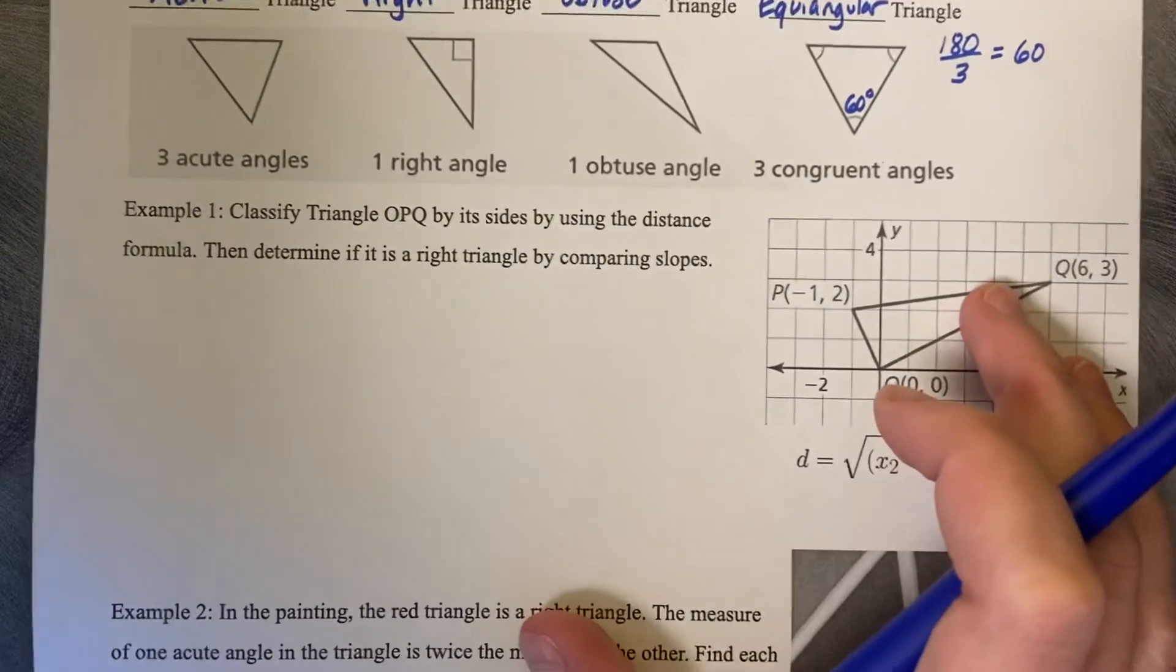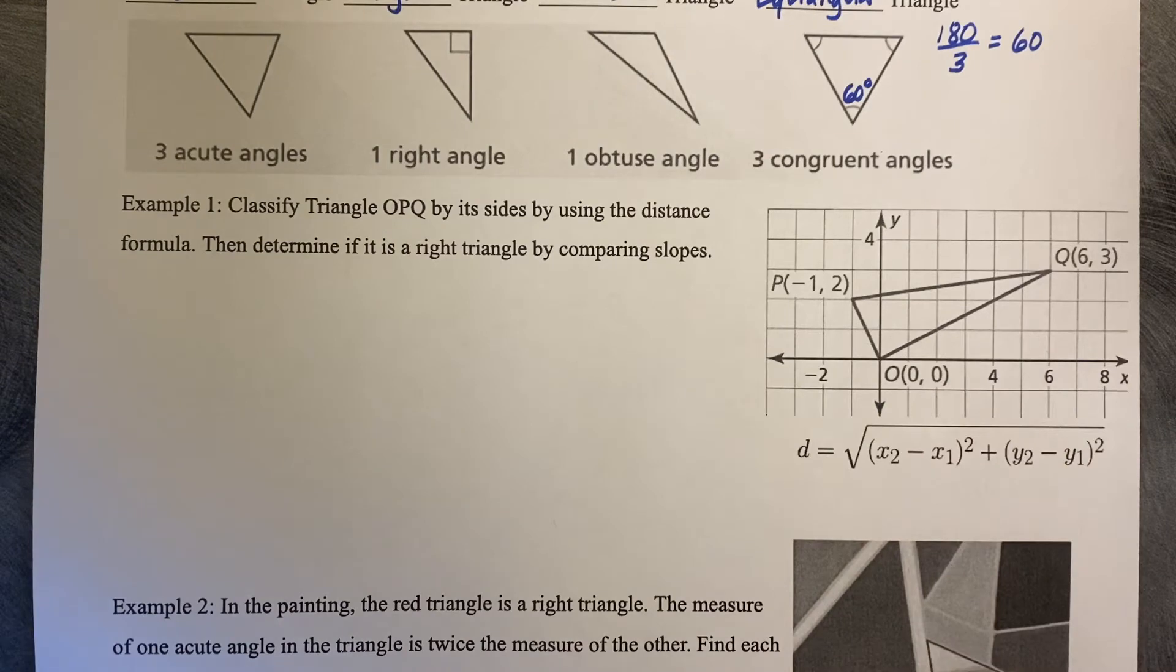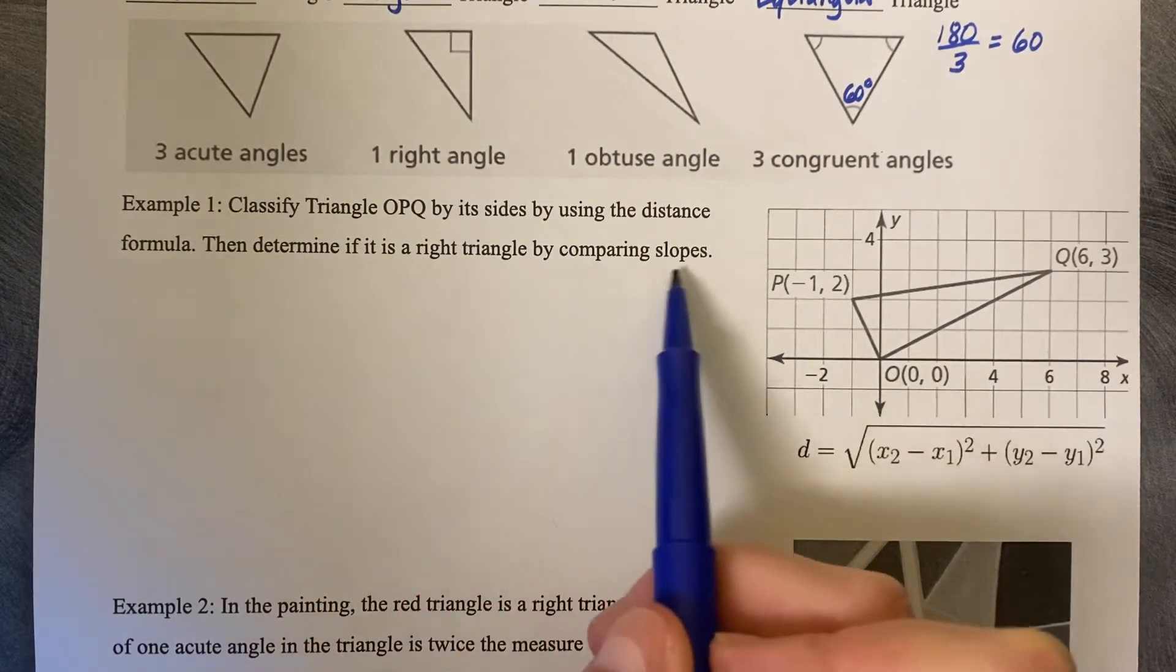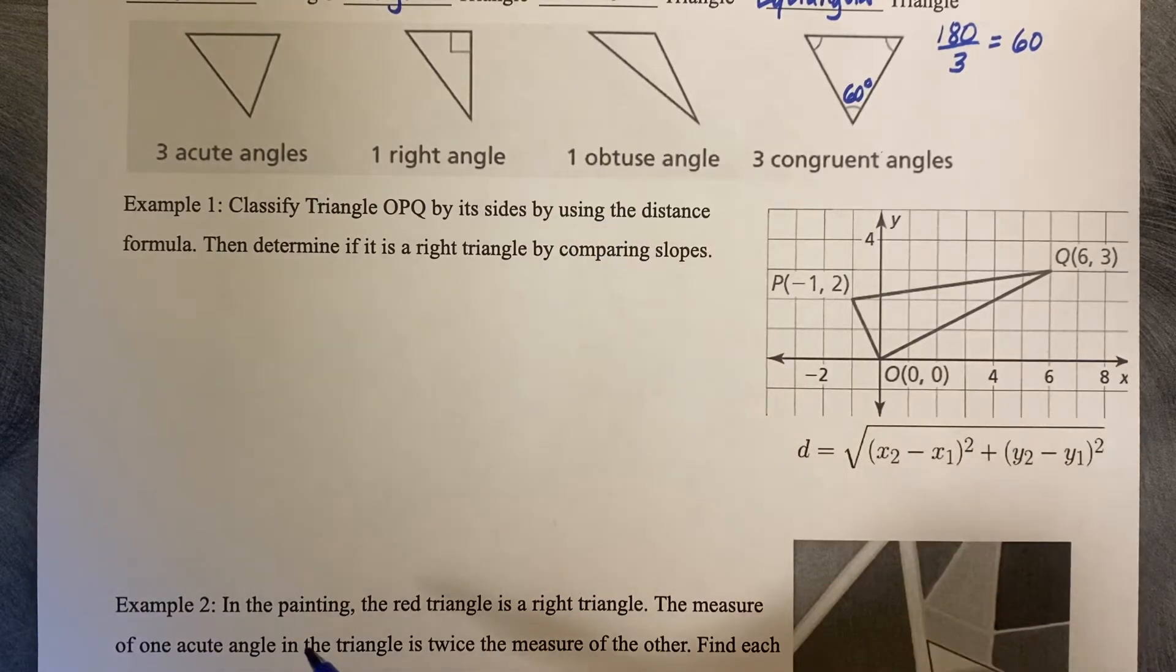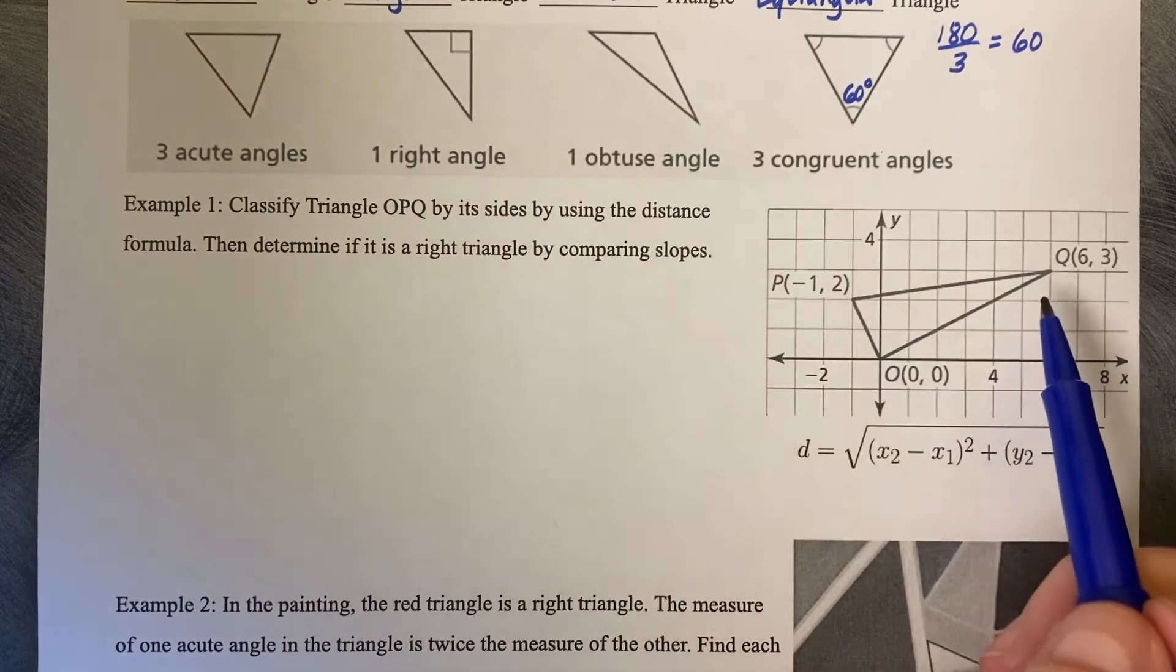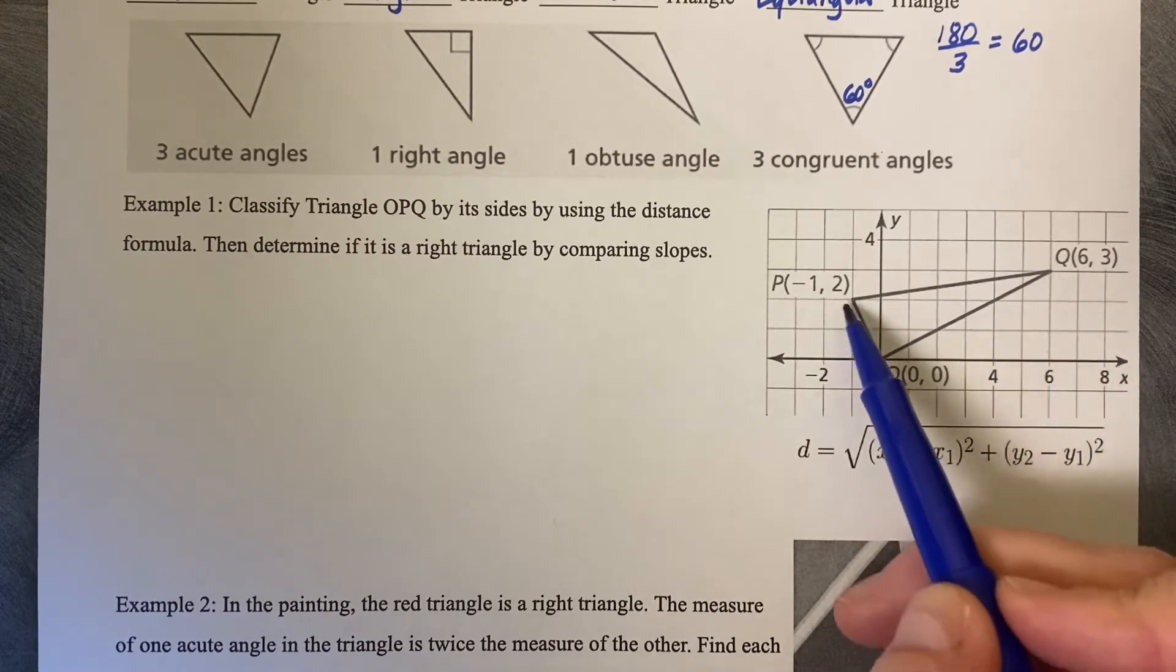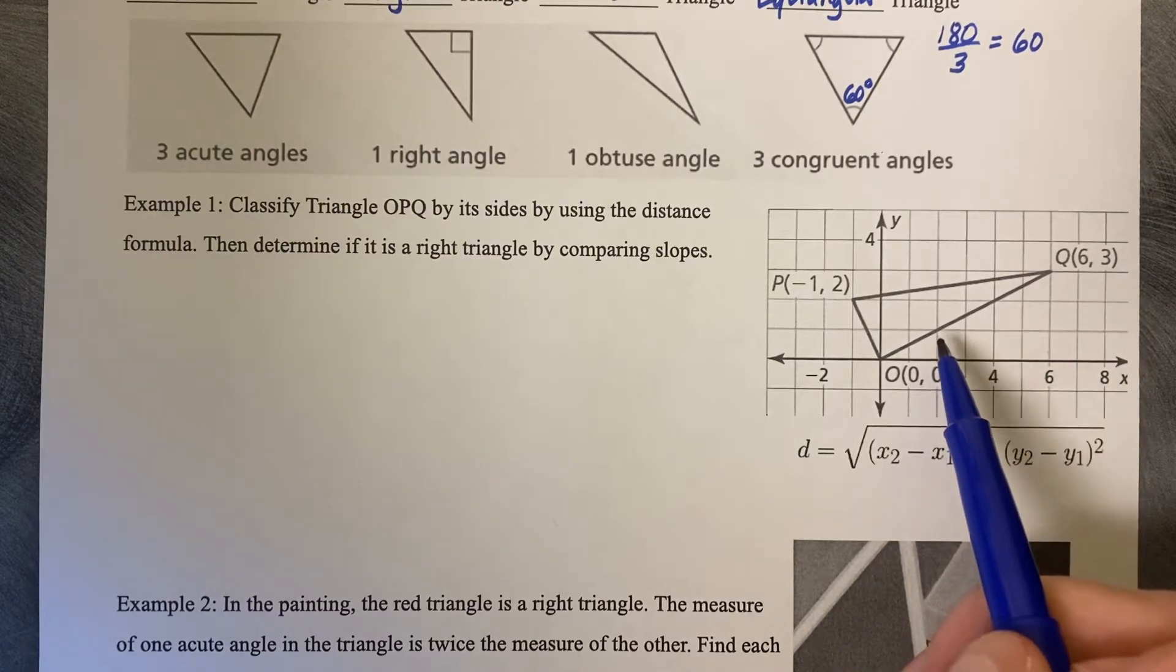Here's example number one. Classify the triangle OPQ by its sides by using the distance formula, and then determine if it's a right triangle by comparing slopes. First thing it wants to do is classify it by its sides. If we look at this triangle, the two sides that look maybe the same length are PQ and OQ. I can clearly tell that PO is too short. So this could either be scalene or it could be isosceles, but I don't think it's going to be equilateral.